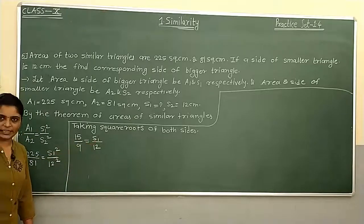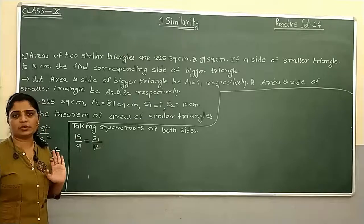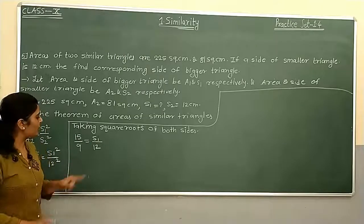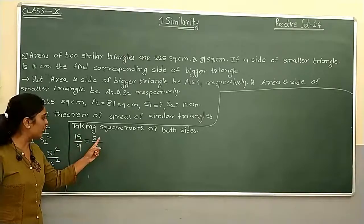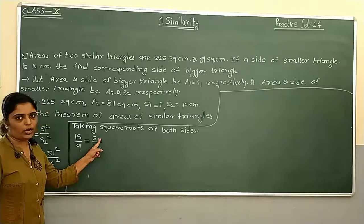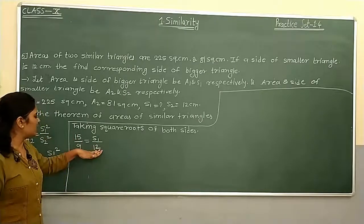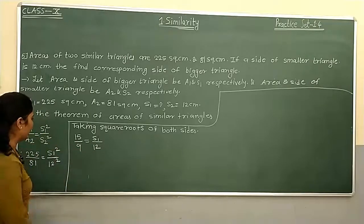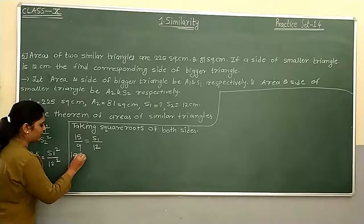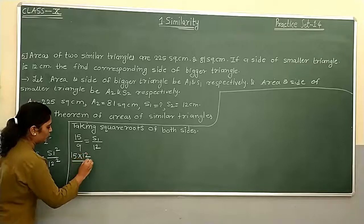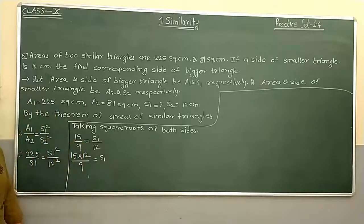We just need to find the value of S1. There is no need to cross multiply here because S1 is already in the numerator. We just bring 12 to multiply on this side. So S1 equals 15 into 12 upon 9.